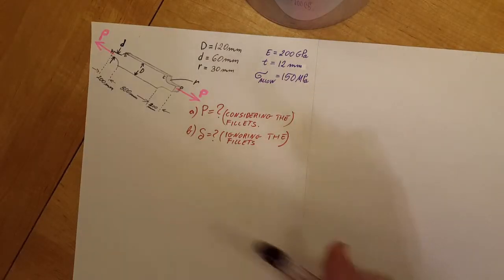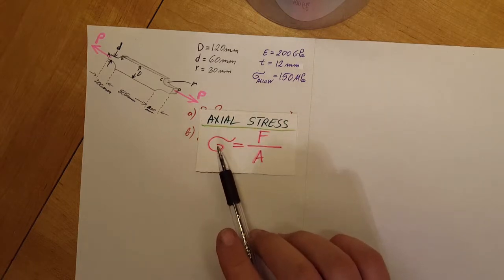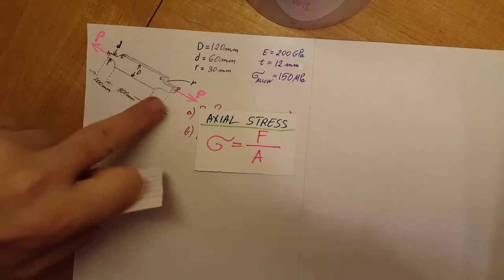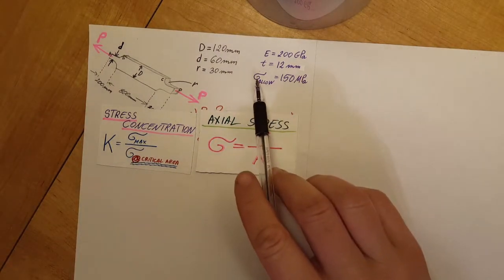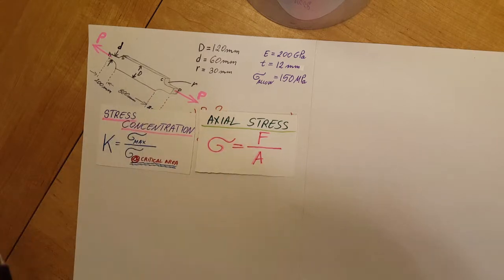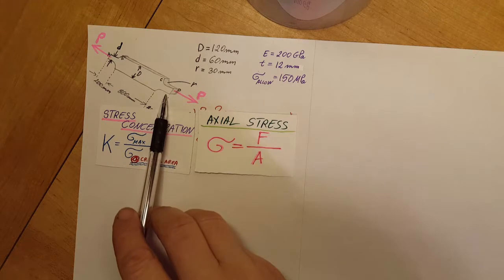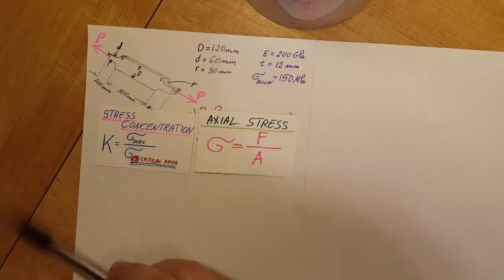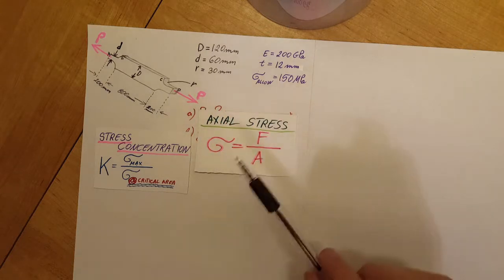To find the axial force, we are talking about axial stress, so we can use the formula sigma equals force over area. We also have stress concentration because of the two fillets, so we're going to use the stress concentration formula as well. Since we have all dimensions given, we'll combine these two formulas to find our force F.